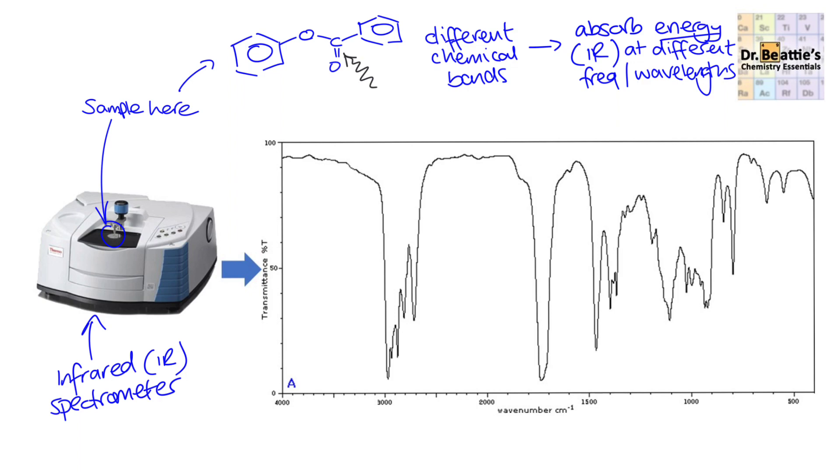For example here, if our sample is this ester, the machine would irradiate the sample with infrared radiation. Different bonds will absorb different frequencies of this infrared radiation. On absorbing this infrared radiation, what actually happens is the bonds will either stretch or bend. For example here, if we take this carbonyl C double bond O, as it absorbs the infrared radiation, this carbonyl bond stretches outwards and inwards.